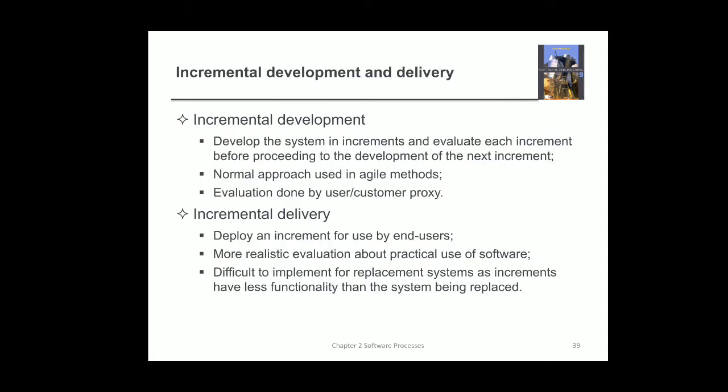Now we will study about incremental development and delivery. Incremental development involves developing the system in increments and evaluating each increment before proceeding to the development of the next increment. While one increment is developed, it has to be evaluated. Once evaluation is done and everything is working fine, then only we go for developing the next increment. Most agile methods make use of this incremental development process. Whatever evaluation is done, it will be done either by the user or a customer-side proxy — someone from the customer side can come and evaluate the things.